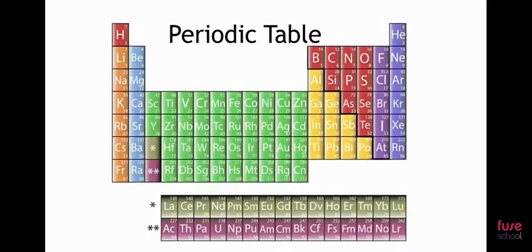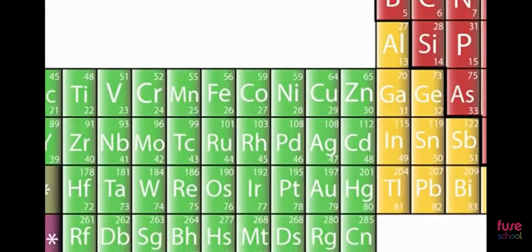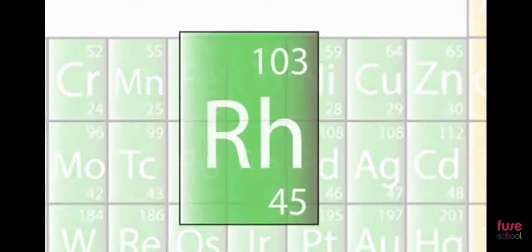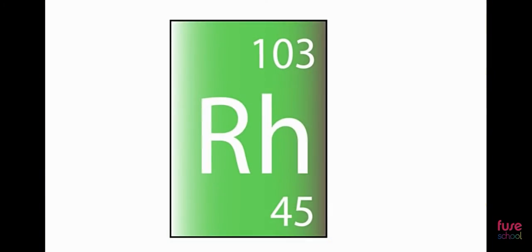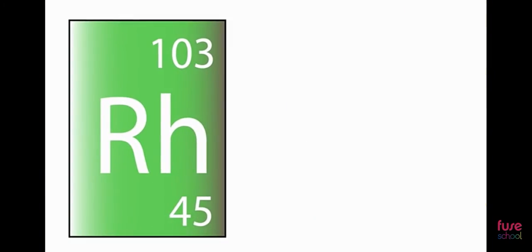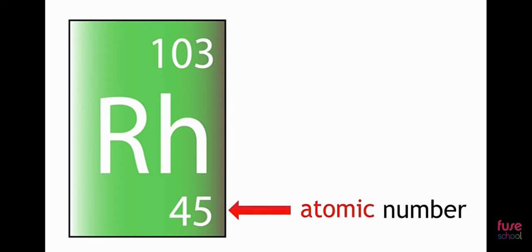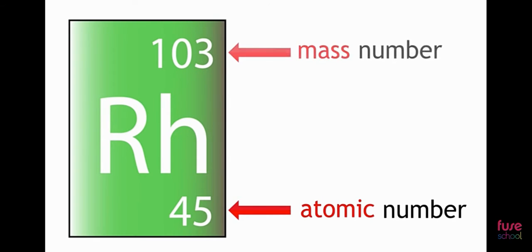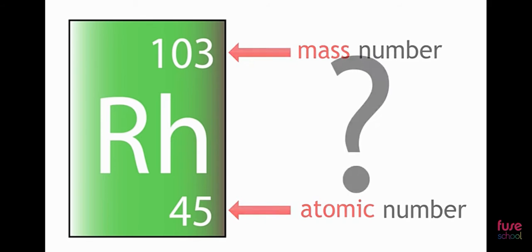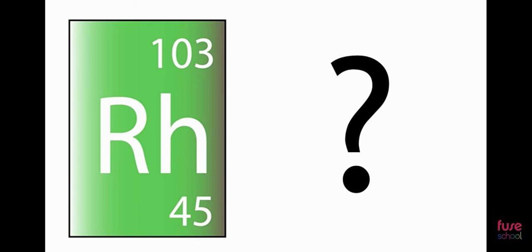When you look at the periodic table, you'll see that each element has its own box. And within that box, you'll find two numbers: the atomic number, or proton number, and the mass number. But what do these numbers mean?